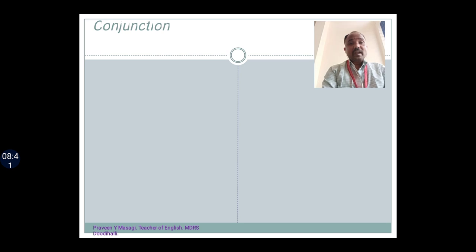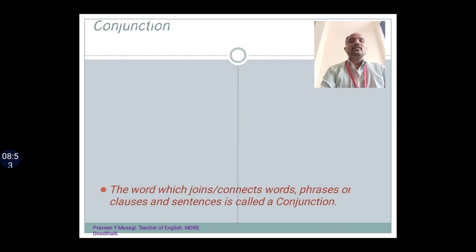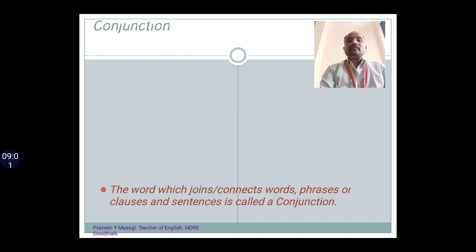Now it's time to move on to the next part of speech, that is conjunction. The very word conjunction — 'conjunct' means joining. It does the duty of joining; it joins or connects words, phrases or clauses and sentences. A word that joins or connects words, phrases, clauses and sentences is called a conjunction. The duty of conjunction is to join and to connect.